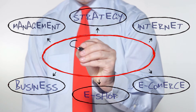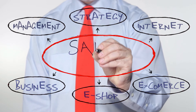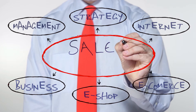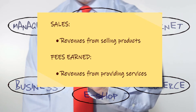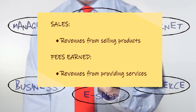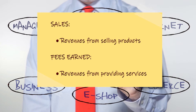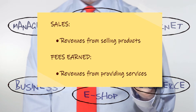Revenues are normally identified according to their source. For example, revenues received from selling products are called sales. Revenues received from providing services are called fees earned.